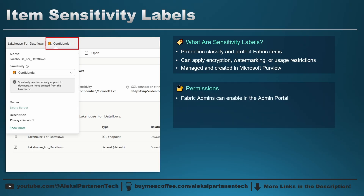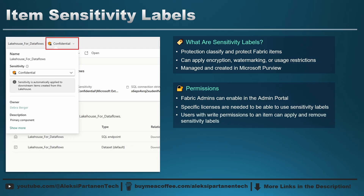Regarding permissions for sensitivity labels: your Fabric admin must first enable the feature in the admin portal. You also need specific licenses like Microsoft Purview Information Protection in order to create and use these sensitivity labels in Fabric. If you don't have those, you can't start using this feature. If you meet all the requirements and your admin has enabled them, you can apply them to items you have the right permissions to — making them similar to tags and endorsements.